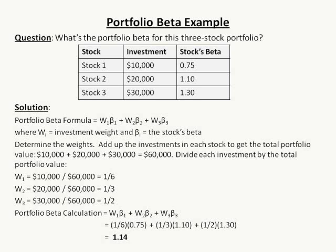Beta is a measure of systematic risk. The Beta of the overall stock market is 1. Beta measures the sensitivity of the stock to the overall stock market. Betas typically range from 0.5 up to 1.5, although they can be outside that zone. A stock with a Beta greater than 1 — say 1.3 — has exhibited more volatility and sensitivity to the market than a stock with a Beta of, say, 0.75. Market timers are particularly interested in Portfolio Beta, because if they anticipate the stock market falling, they would most likely try to reduce the Portfolio Beta. If they anticipated the market advancing, they would most likely increase the Portfolio Beta.